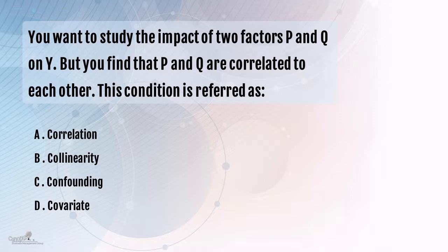Before we get into the answer, let's take a step back. We have two independent variables P and Q, and Y is the dependent variable. We find that P and Q are correlated among themselves. This phenomenon, where two independent factors included in the model are correlated within or among themselves, is called collinearity, or in other words, multicollinearity.